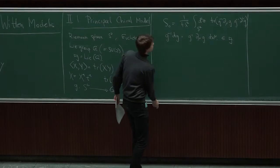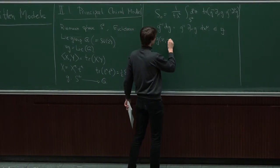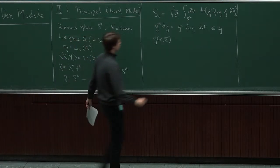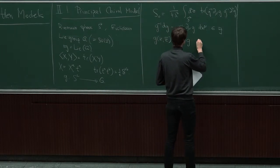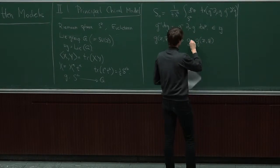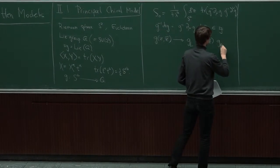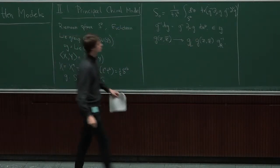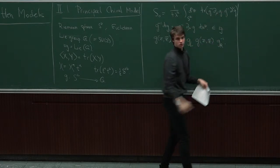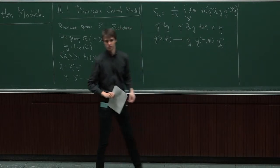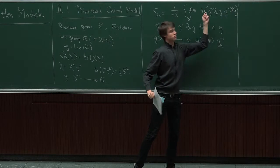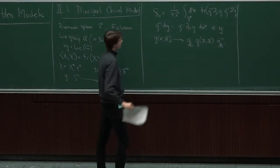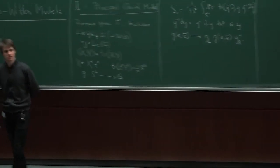This action has a nice symmetry: mapping the group element g(z, z̄) to g_L · g · g_R, where g_L and g_R are constant group elements — they don't depend on z or z̄. This is a symmetry because g⁻¹ and g cancel the left and right factors, and cyclicity of the trace removes the remaining ones. So we have this G×G symmetry. Classically, this theory is conformally invariant since I didn't put in any dimensionful constant.